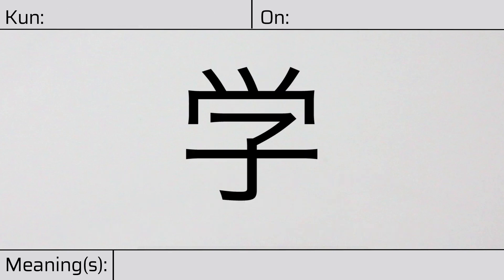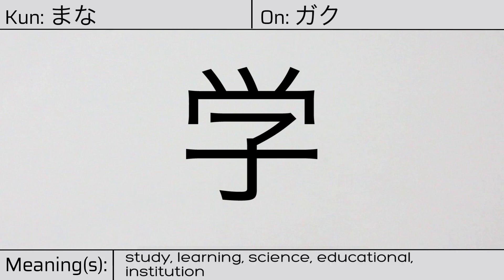Welcome to this lesson on Japanese Kanji. Today, we'll be discussing this character. This Kanji has a kunyomi or Japanese reading of mana. And it has onyomi or Chinese reading of gaku. This character has the meanings study, learning, science, educational, or institution.